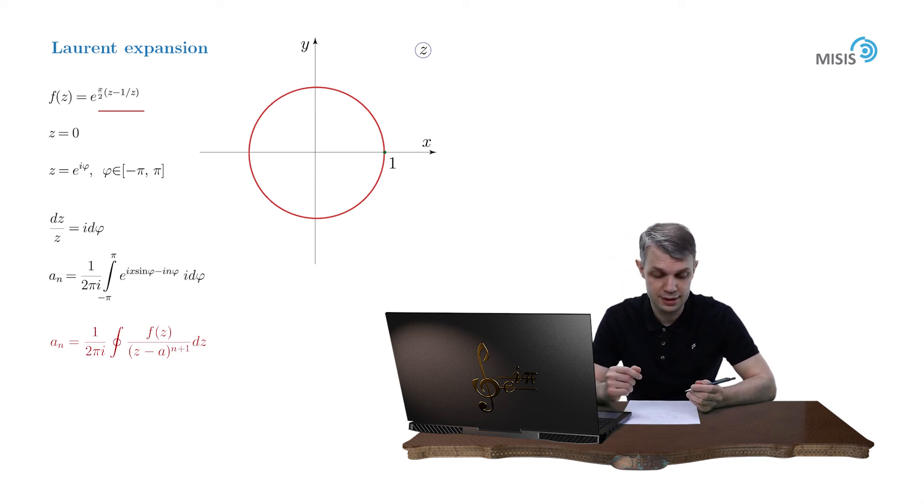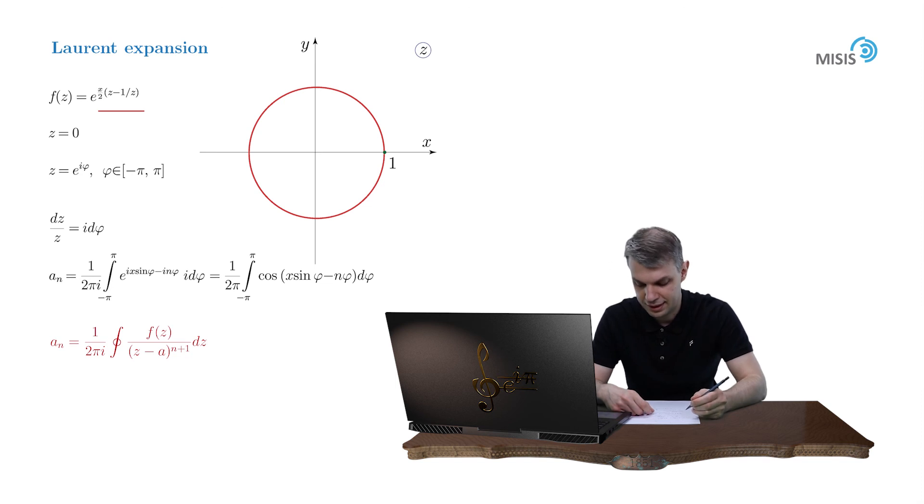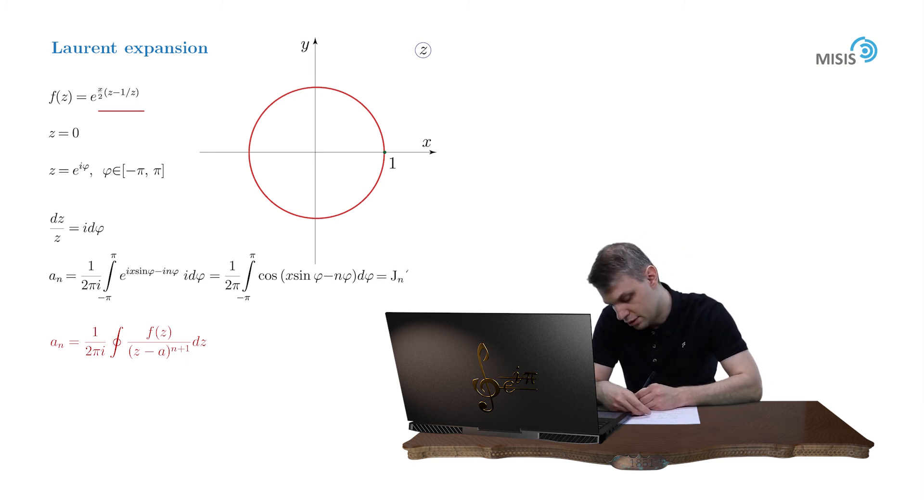Now using Euler's identity, we may split this exponential into cosine and sine part. And the sine part will lead to a vanishing integral due to the fact that the corresponding function is odd. So we are left with the integral of 1 over 2 pi, from negative pi to pi of cosine of x sine phi minus n phi d phi.